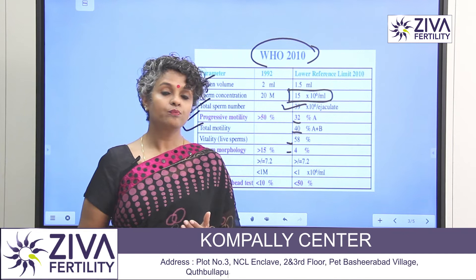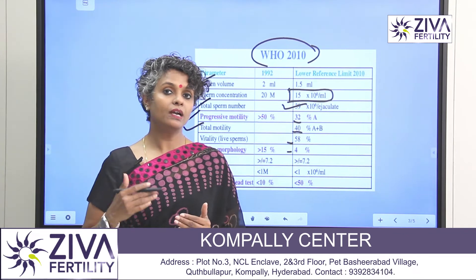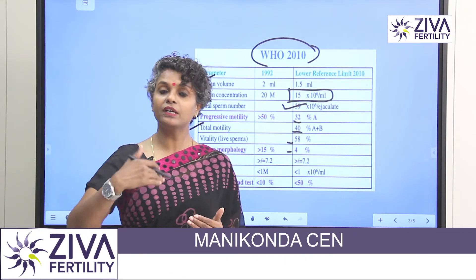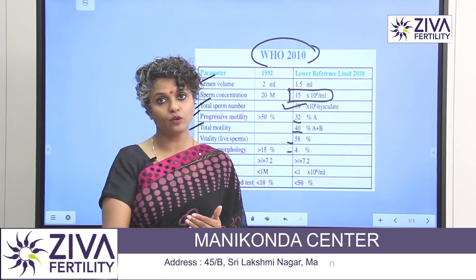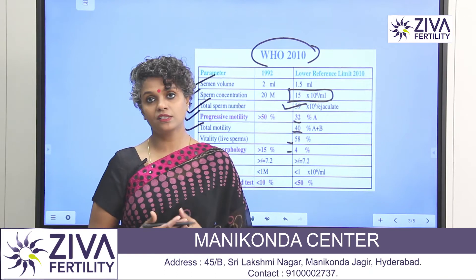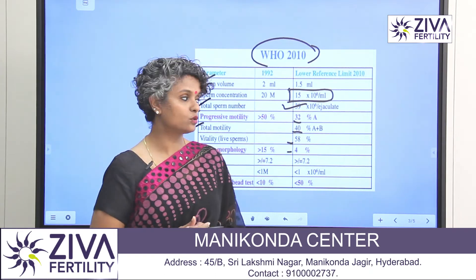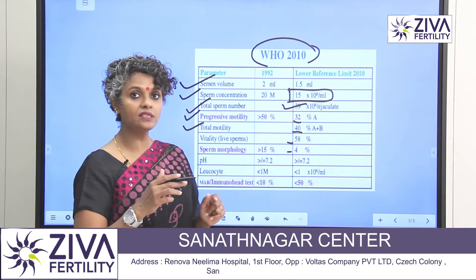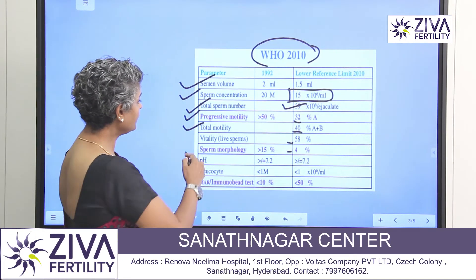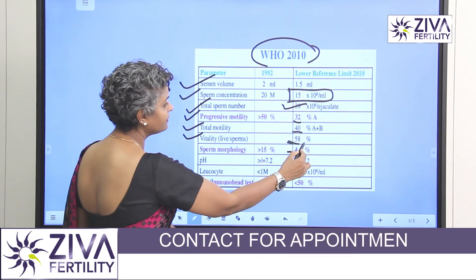Why are we doing this? Because non-progressive sperms can, via a procedure in the laboratory, become progressive, and that can help in the successful achievement of pregnancy. So it's very critical that we add progressive and non-progressive together.